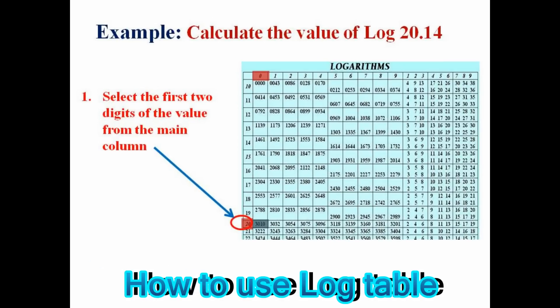Now let us take an example to calculate the value of log by using the log table. Here is an example of log 20.14. There are four digits in this number. For the calculation of log 20.14, we take the first two digits from the mean column, as shown.